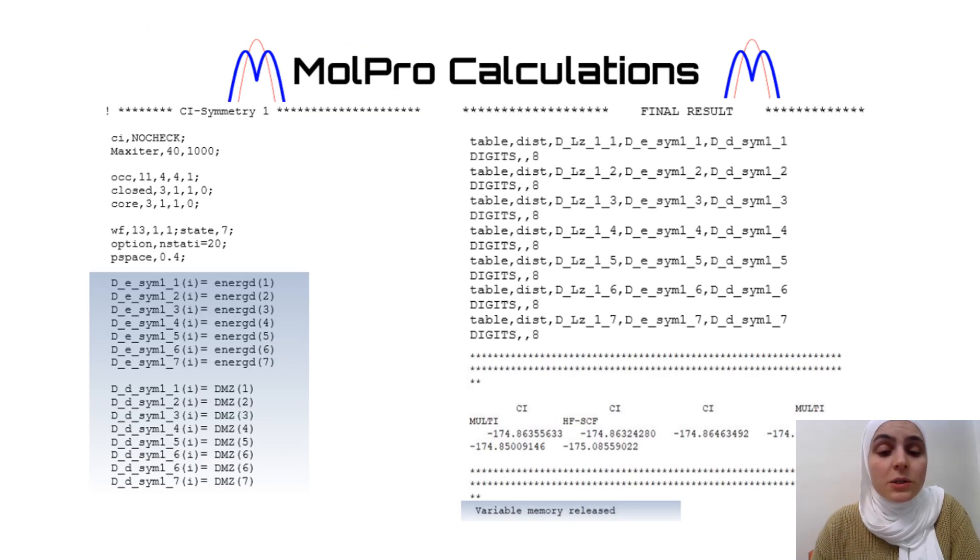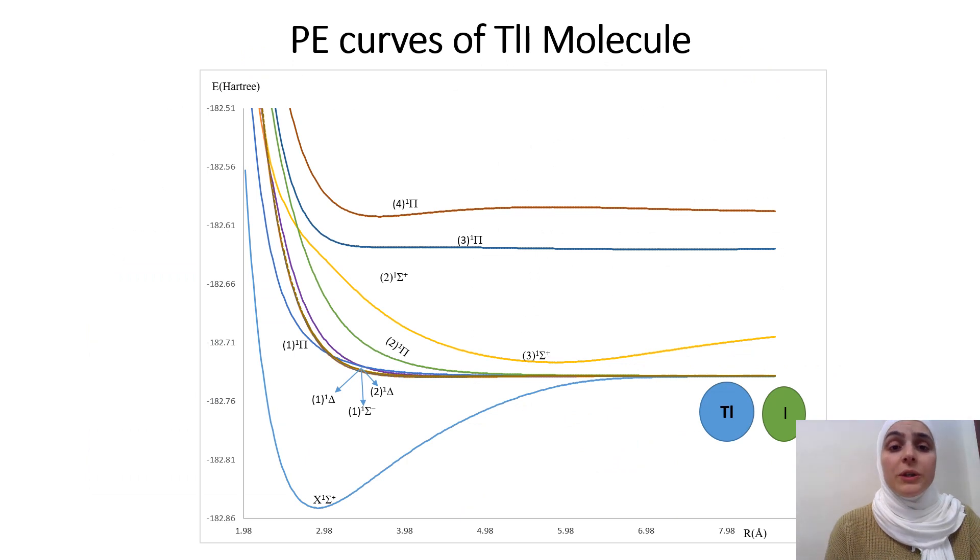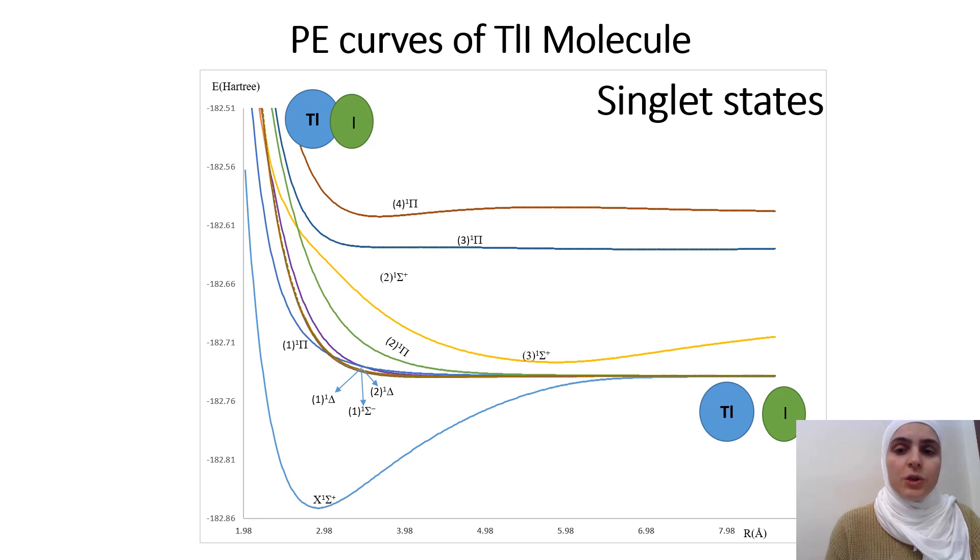After performing our computations using the Molpro, the potential energy curves and the dipole moment curves are obtained and plotted as a function of internuclear separation. We start with the first figure about the potential energy curve of TLI molecule of the ground and excited states of singlet multiplicity of TLI including sigma pi and delta states. As you can see here, the energy of the singlet state is being expressed in Hartree and the internuclear separation in angstrom. We can clearly tell that most of the states are shallow well-bound states. This reflects that the dominancy of the repulsive forces in our studied molecule.